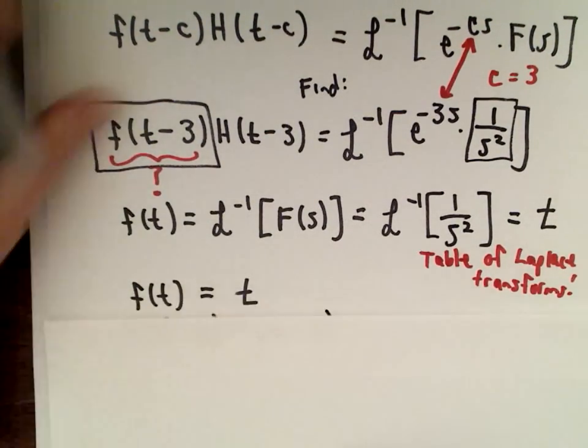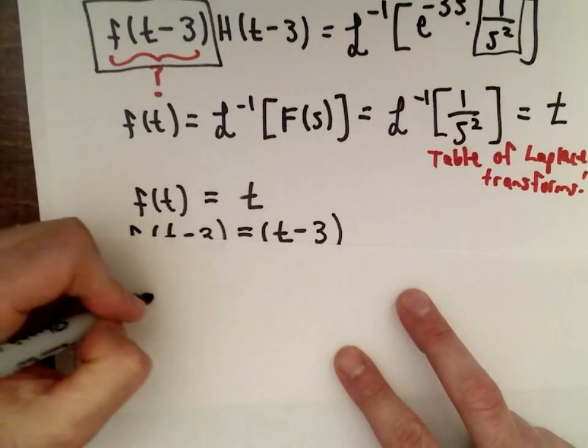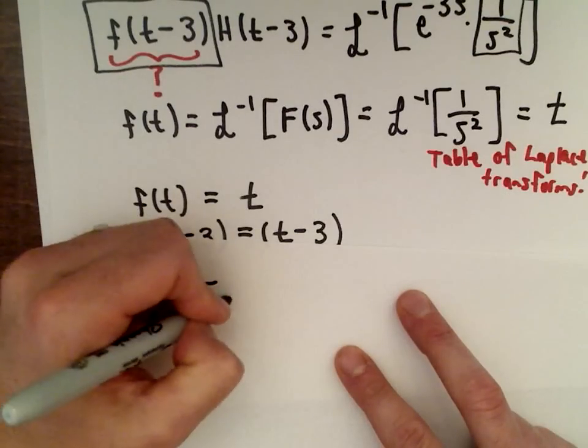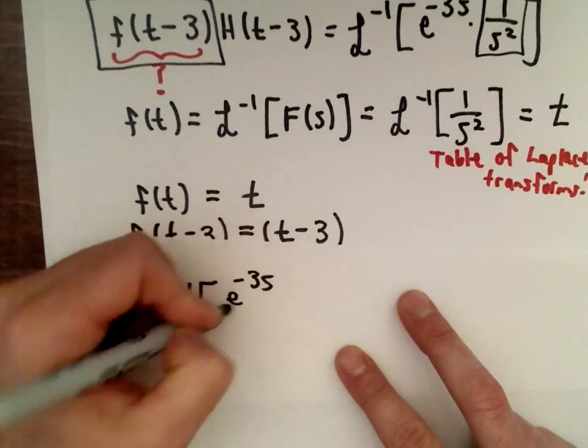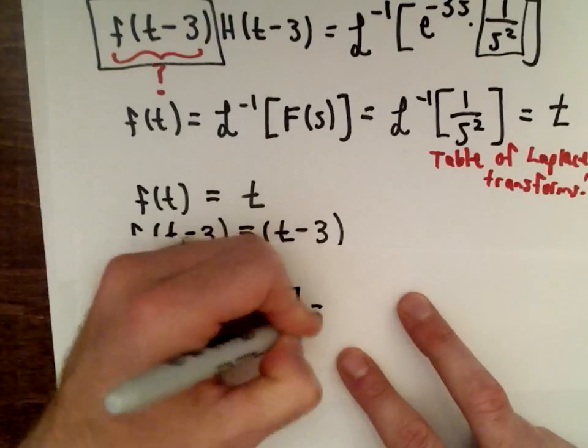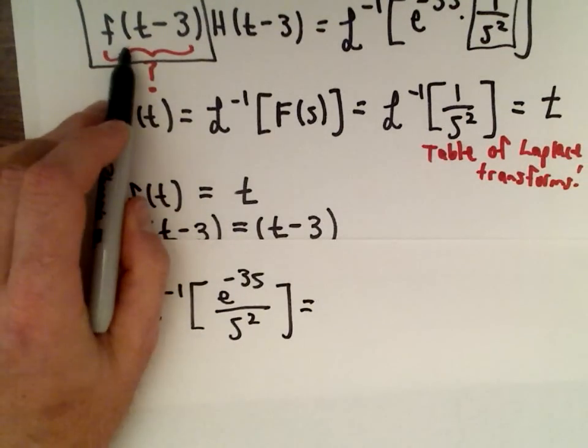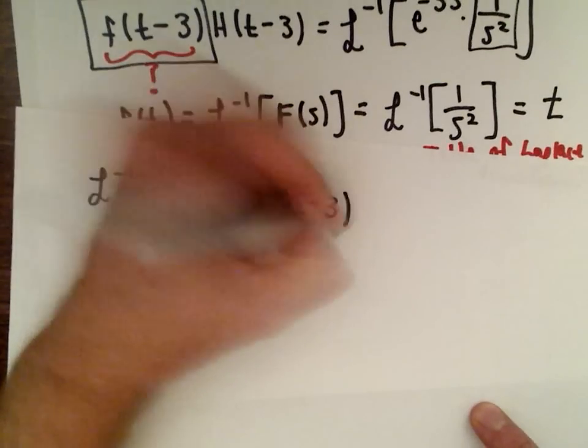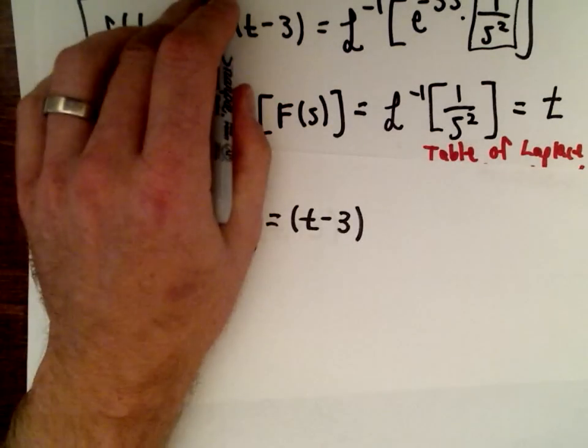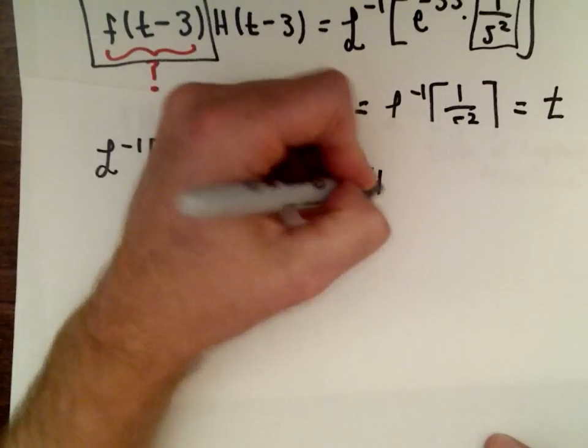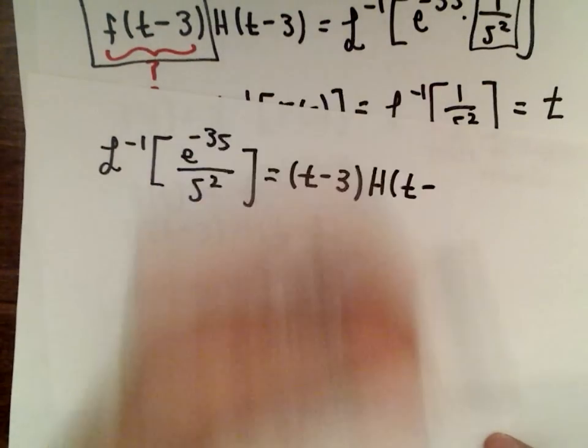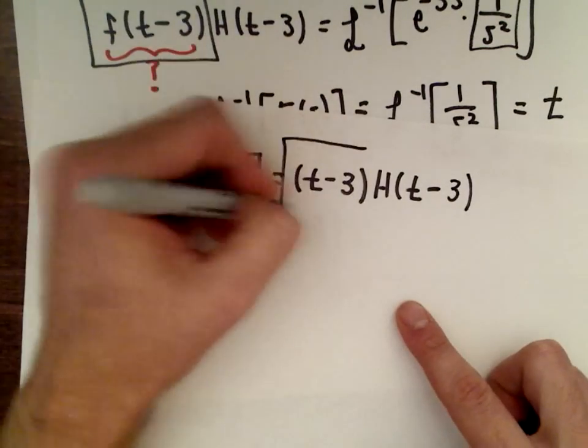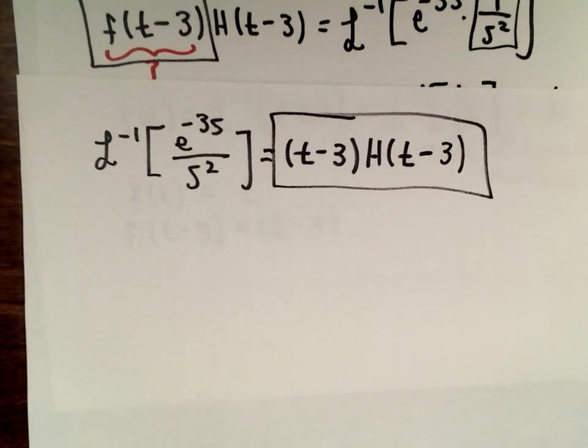The inverse Laplace transform of that original function, e to the negative 3s divided by s squared, is going to be equal to f(t-3), which we said in this case turned out to be exactly just t minus 3. And then we multiply that by H(t-3), because again, our c value is equal to 3. And that would be our answer in this case. Thank you.